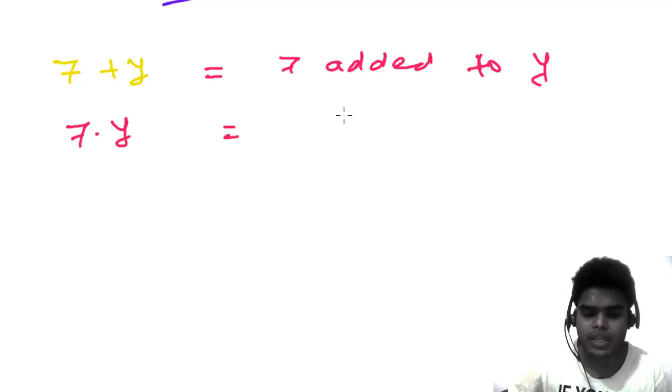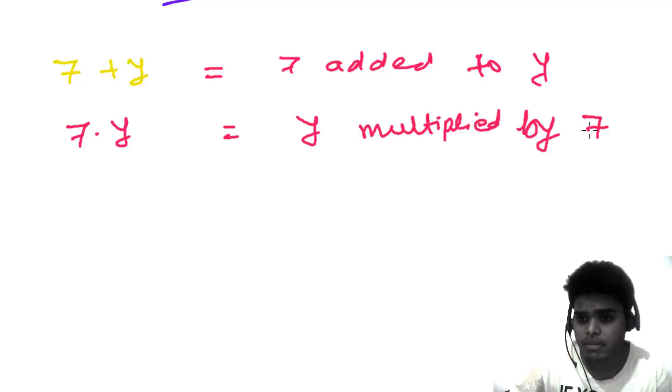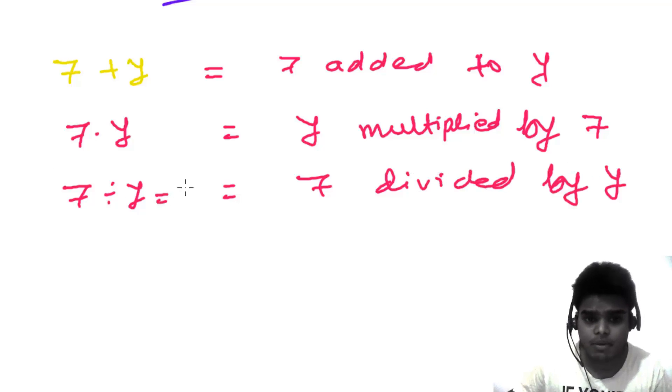You will see y multiplied by 7, or 7 divided by y. Then you can say 7 divided by y. Sometimes you can see this 7 divided by y as 7 over y too. Sometimes you'll see 2y minus 5.